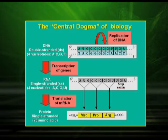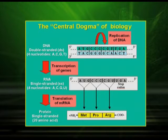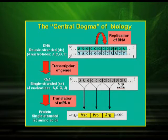The central dogma of biology states that DNA replicates by the process of replication, then DNA forms RNA through transcription of genes, and then RNA forms protein through translation of messenger RNA. We can see in the picture the different amino acids used during the process.